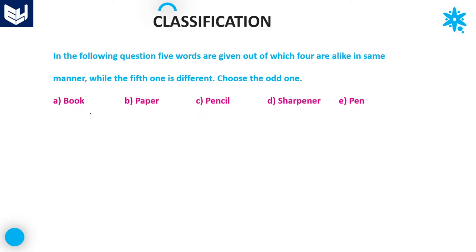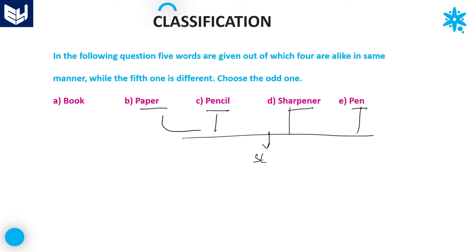Let's go to the next question. The options are: book, paper, pencil, sharpener, and pen. Pen, sharpener, pencil, and paper — all these items are stationery items. But coming to book, it is not a stationery item. That is the reason why it does not belong to the same category as the remaining four. Option A — book — is the odd one. Option E is the right answer.